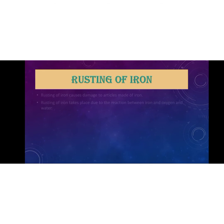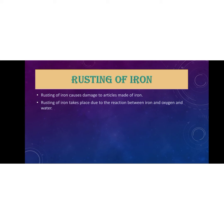Now, what do you mean by rusting of iron? Rusting of iron is also a chemical change. It causes damage to articles made of iron. Rusting of iron takes place due to the reaction between iron, oxygen, and water.